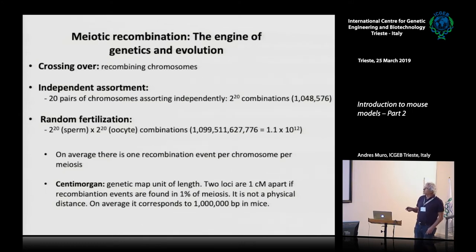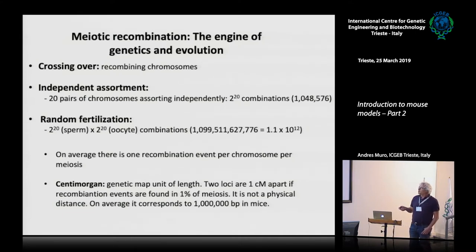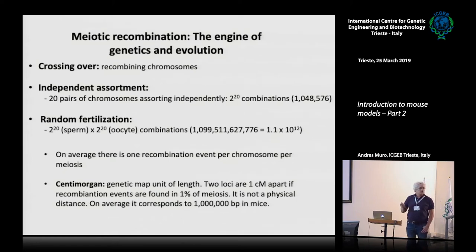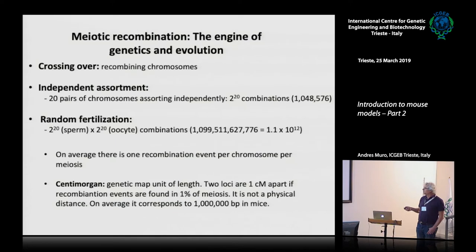In mice, we have 40 chromosomes, so this is 2 to the power of 20, multiplied by 2 to the power of 20 — giving us this number of recombination combinations without even considering crossing over. So each individual is unique. A centimorgan is a genetic map unit of length: two loci are 1 centimorgan apart if recombination events are found in 1% of meiosis.